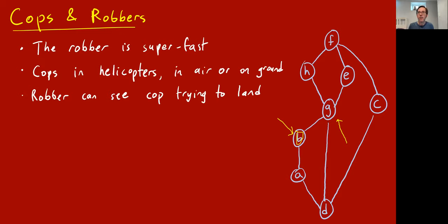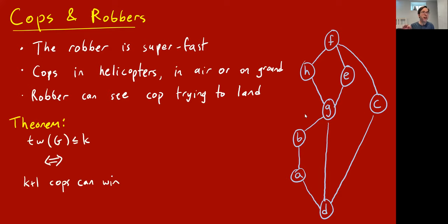For example: cop one lands at B, so the robber runs from G to D. Now we have cops at B and G. The cop at B flies up and tries to land at D, but as it's landing the robber can run to C, and so forth. You can tell that two cops cannot catch the robber in this graph — the robber can always evade them. But it's a theorem that tree width is at most k if and only if k plus one cops can win the game.